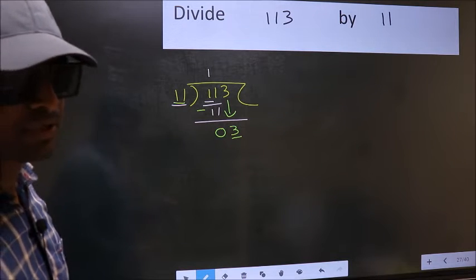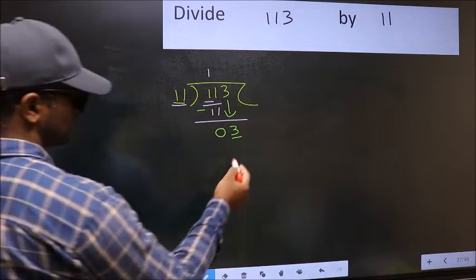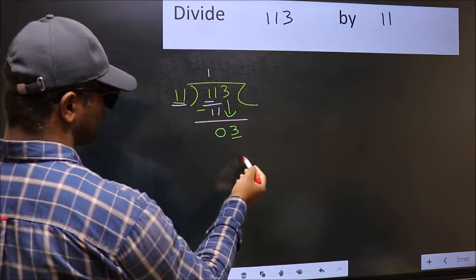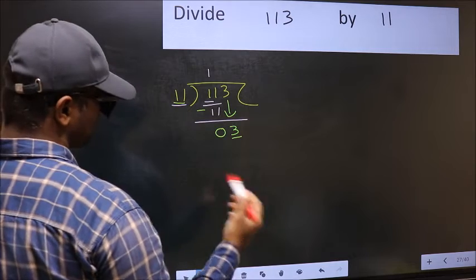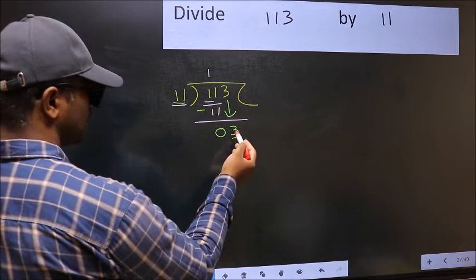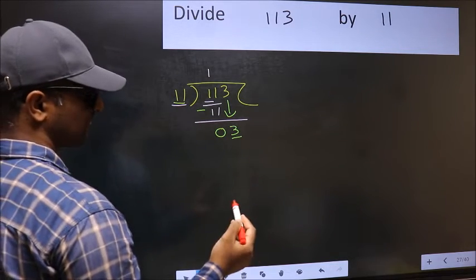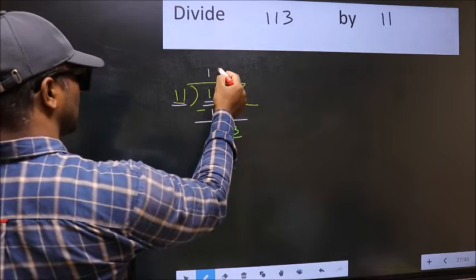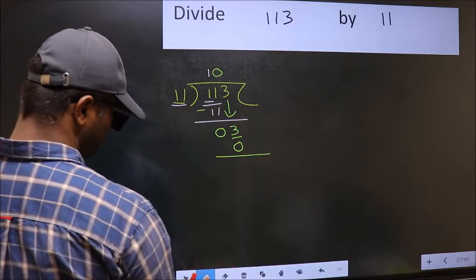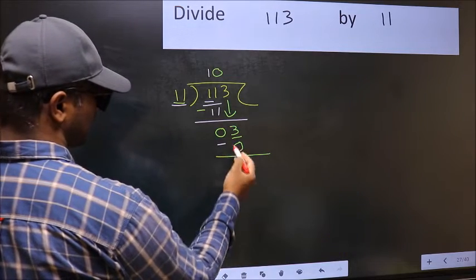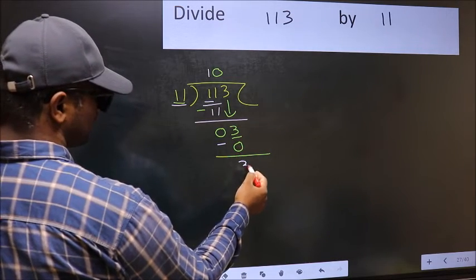Instead, what you should think of doing is, which number should we take here? If I take 1, we will get 11. But 11 is larger than 3. So what we should do is, we should take 0. So 11 into 0, 0. Now you should subtract. 3 minus 0, 3.